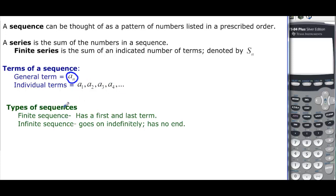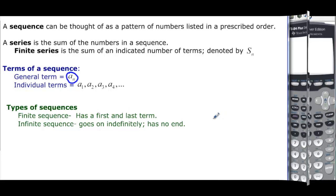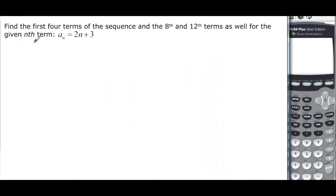We have types of sequences. A finite sequence, as it sounds, has a beginning and an end — a first and last term. An infinite sequence gives you a first term but just goes on forever. So we want to find the first four terms of a sequence and then find the eighth and twelfth terms.